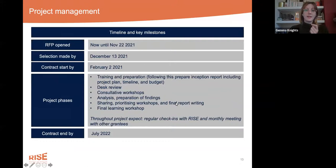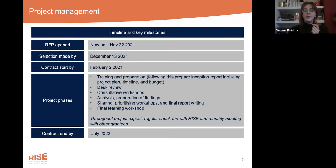Just a few points on the timeline. You have until the 22nd of November to complete and submit your applications. We'll complete our evaluations and start making selections by December 13th, making some allowances for the holiday period. Contracting will take place over January, with the contract start date of February 2nd. At that point we'll begin the training and preparation phase, and teams will develop their inception report including project plan, timeline, and budget. Regularized check-ins will take place each month with all grantees. All projects should finish by the end of July 2022 — a six-month project — by which time all deliverables need to be submitted and completed.